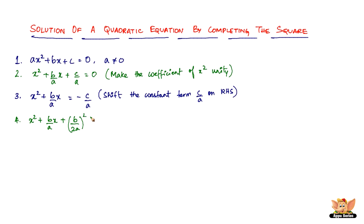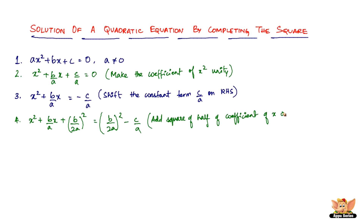We add the same thing on both sides, giving us b by 2a whole squared minus c by a. The reason we're doing this is to make this a perfect square. Using the identity a squared plus 2ab plus b squared, we can see that what we are missing is the 2ab term, and b here is b by 2a.